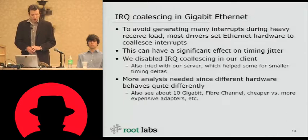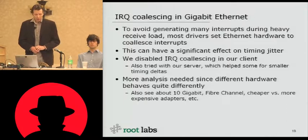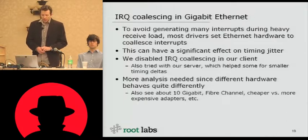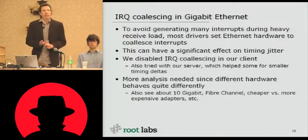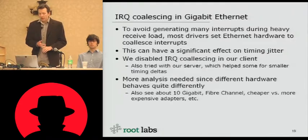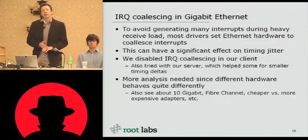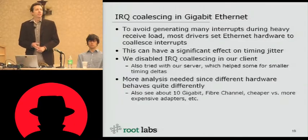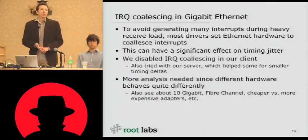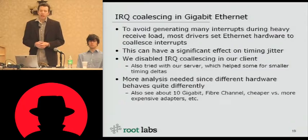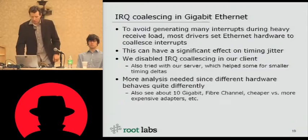One thing we'd like to see more work on is more analysis of different types of networking hardware — 10 gigabit ethernet, really fast low-latency fiber channel — and also some analysis of cheaper versus more expensive gigabit adapters. Some of the cheaper ones may do poor coalescing or better coalescing; it depends on how exploitable the attack is.